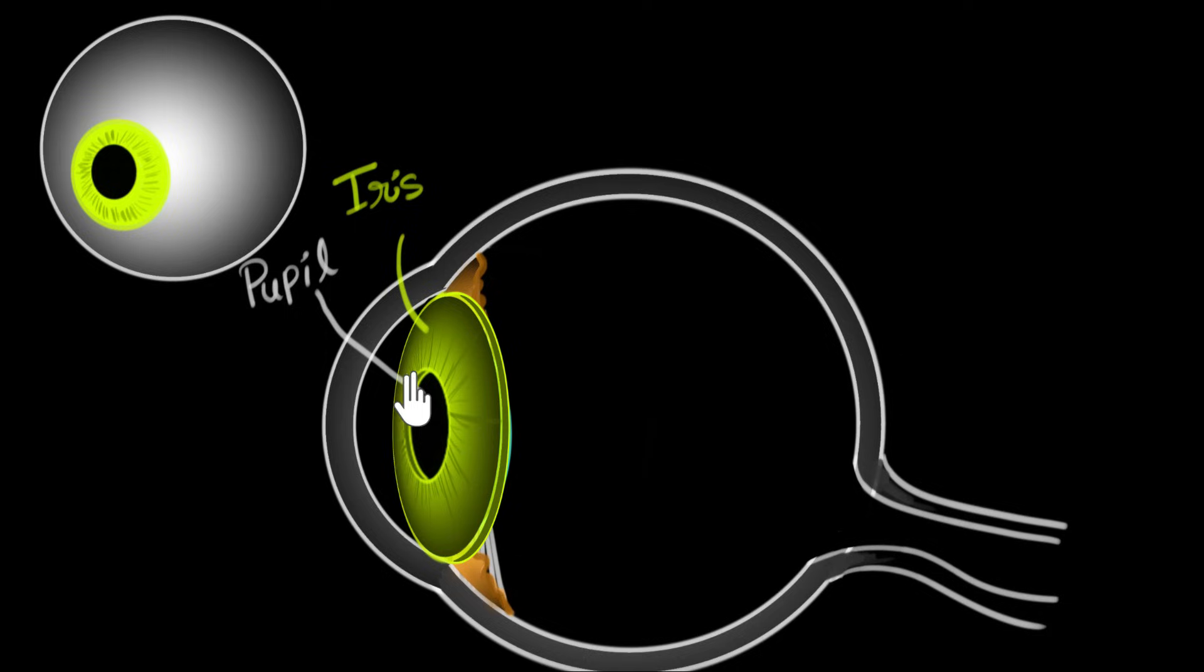All right, now let's get rid of the iris so that we can see the other parts of the eye. So now we are only seeing a section of the iris. It's the same iris with the hole in between. So let's look at the other parts.